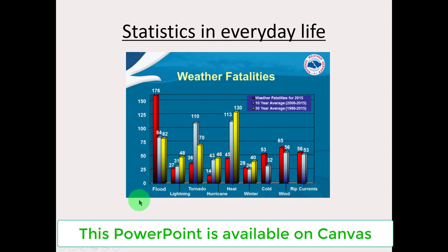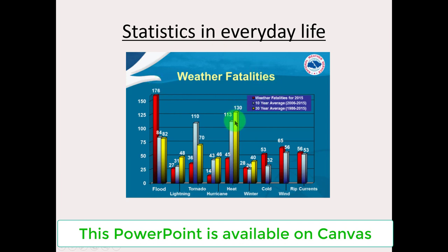You can convey a lot of information really quickly. For instance, which type of phenomenon here seems to have the largest number of fatalities? This red bar over here for flood seems to stick out. Some information is being conveyed pretty quickly. Heat also seems to be another phenomenon with a lot of fatalities associated with it. Even without taking a statistics class, your average individual could see an image like this and interpret it reasonably well.